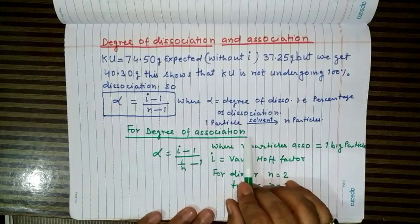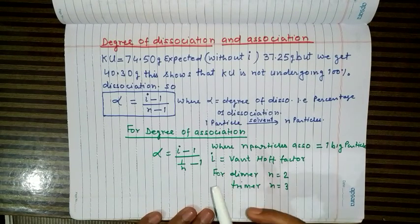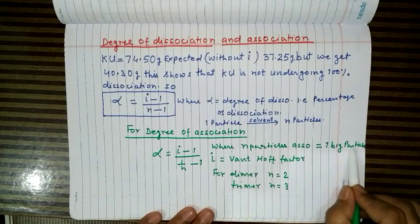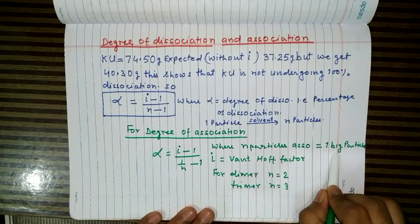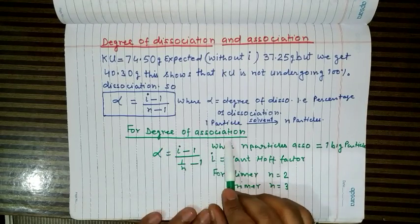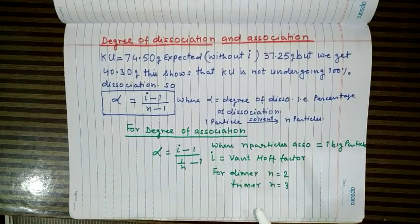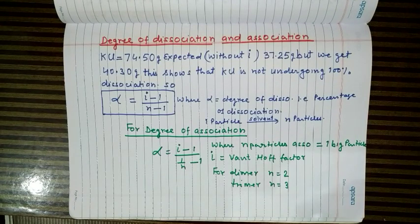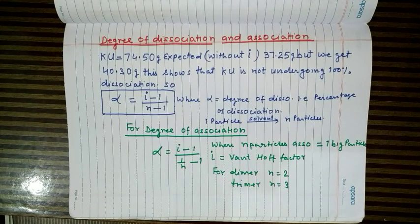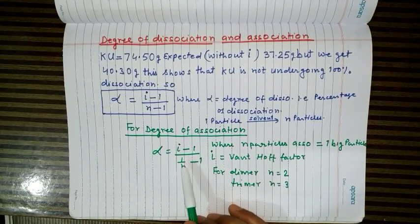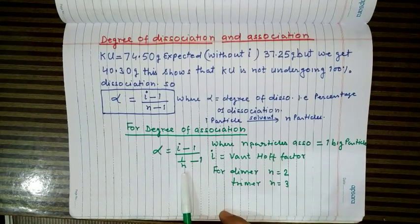Similarly, for association: if two particles associate to form a dimer, the Van't Hoff factor is 1/2. If n particles associate to form one big particle, i = 1/n. The degree of association α is defined as the fraction of total electrolyte particles that associate to form a bigger particle. The formula for degree of association is: α = (i − 1) / (1/n − 1), where n is the number of particles associating.